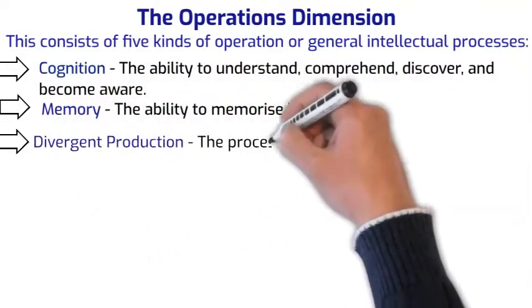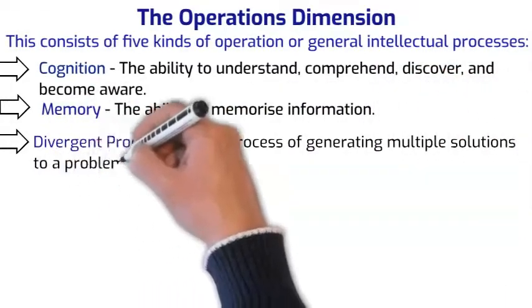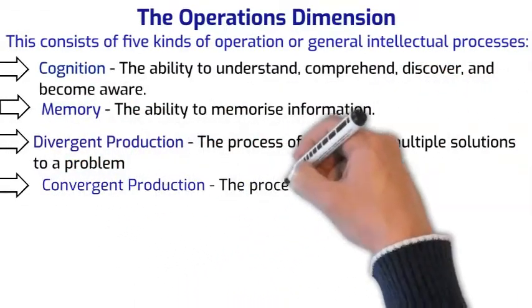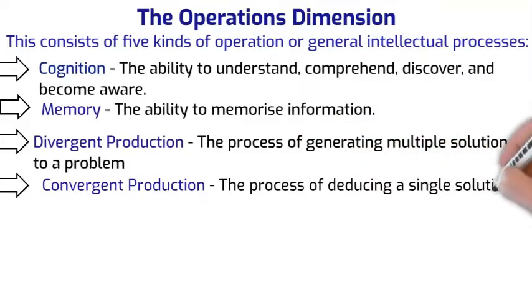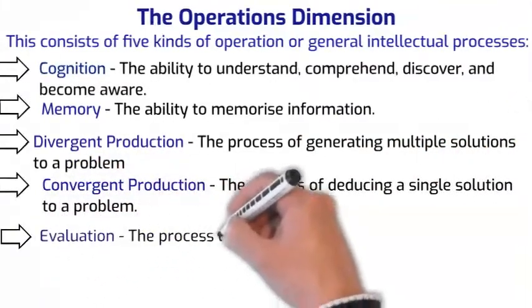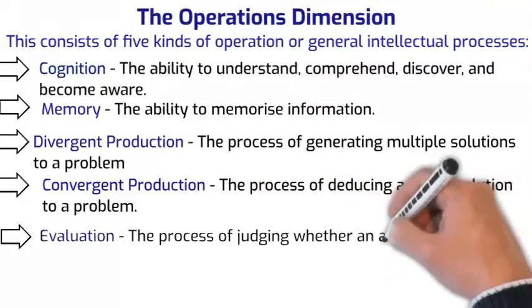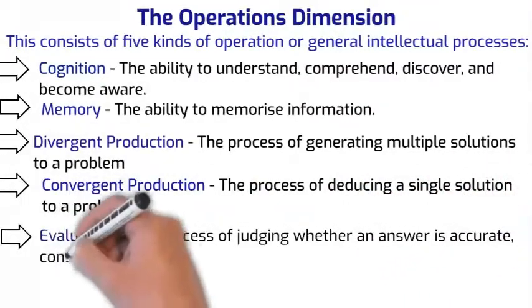Divergent production: The process of generating multiple solutions to a problem. Convergent production: The process of deducing a single solution to a problem. Evaluation: The process of judging whether an answer is accurate, consistent, or valid.